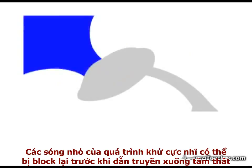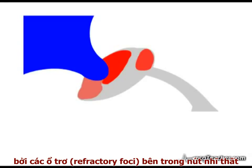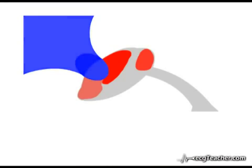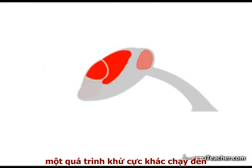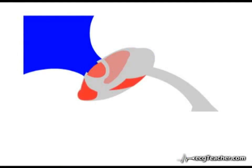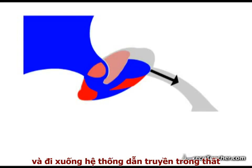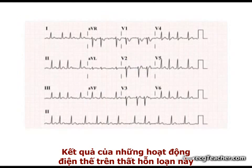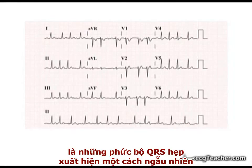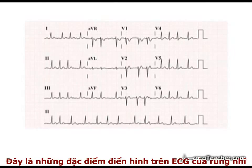Within the AV node, the depolarization wavelet may be blocked in its journey to the ventricles by intranodal refractory foci generated by previous wavelets. As these refractory regions complete repolarization, a depolarization event arriving at the same point at a slightly different time may manage to negotiate its way through the node and discharge into the ventricular conducting system, triggering ventricular depolarization. The net result of these chaotic supraventricular events is a random generation of narrow QRS complexes, with no evidence of P-wave activity on the ECG. These are the characteristic ECG features of atrial fibrillation.